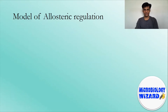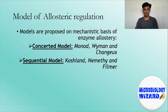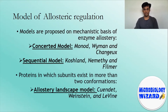Many allosteric effects can be explained by the concerted MWC model put forth by Monod, Wyman, and Changeux, or the sequential model described by Koshland, Nemethy, and Filmer. Both postulate that protein subunits exist in one of two conformations — tensed, represented as T, or relaxed, represented as R — and that relaxed subunits bind substrate more readily than those in the tensed state. The two models differ most in their assumptions about subunit interaction and the pre-existence of both states. For proteins in which subunits exist in more than two conformations, the allostery landscape model described by Cuendet, Weston, and Levine can be used.